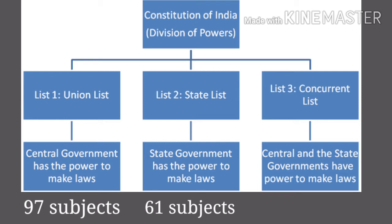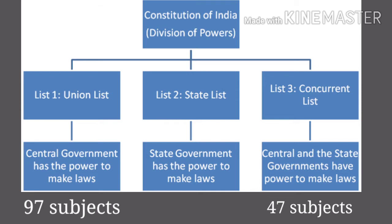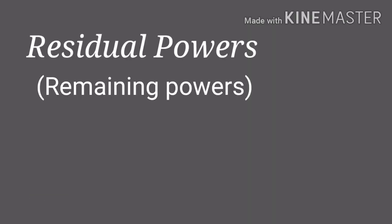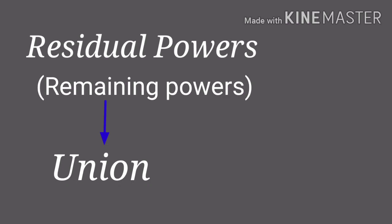Under the third list, that is the Concurrent List, are mentioned the powers that are to be concurrently exercised by both the Union and the State Governments. There are 47 subjects mentioned in this. The residual powers — that means the remaining powers which are not listed in these three lists — belong to the Union.